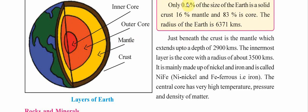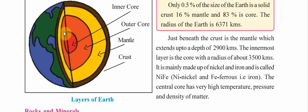Only 0.5 percent of the size of the earth is the solid crust. 16 percent is the mantle — shown in yellow in the diagram — and 83 percent is the core. The radius of the earth is 6,371 kilometers.